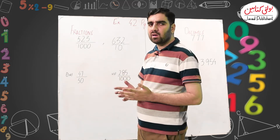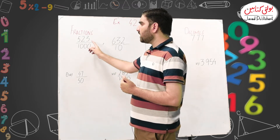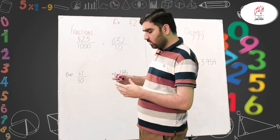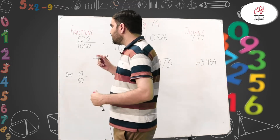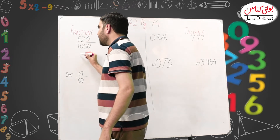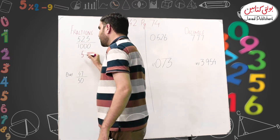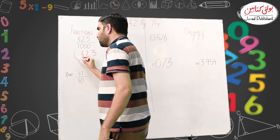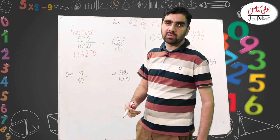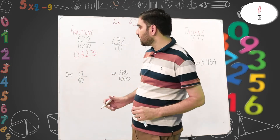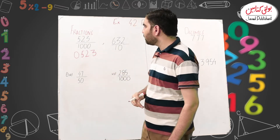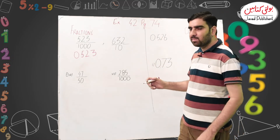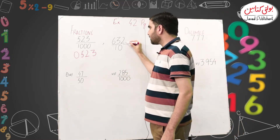So if we look at 523 over 1000, the decimal point is at the end of 523. Because the denominator has three zeros, we move the decimal point three digits from right to left. Our decimal becomes 0.523. Now let us see example number two: 632 over 10.